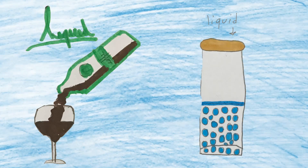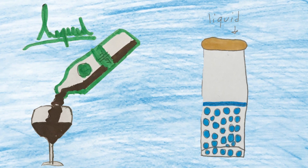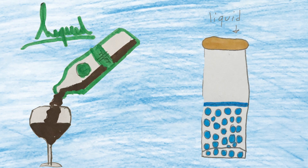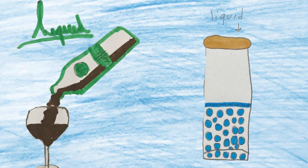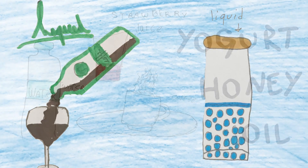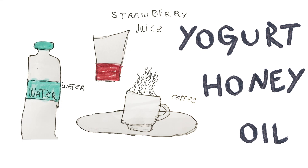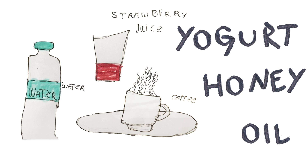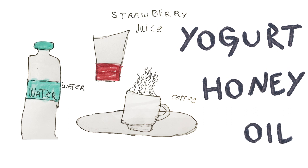In liquids, we can find the particles a little bit close. They don't have a fixed shape. Examples: water, oil, juice, yogurt, honey, coffee, etc.